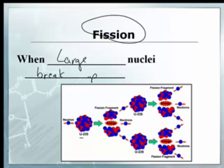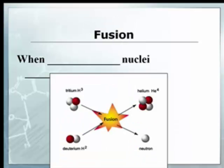An example here would be uranium-235. This is actually the stuff that makes nuclear bombs. It breaks apart after you add a neutron into two fission fragments — two smaller nuclei. Those nuclei then produce neutrons. It breaks apart into smaller nuclei.